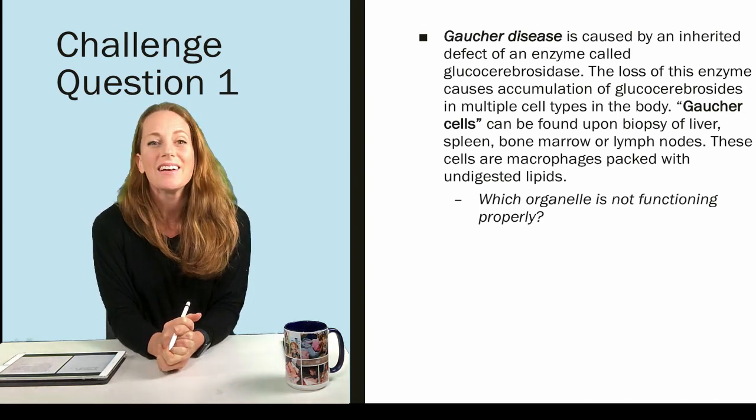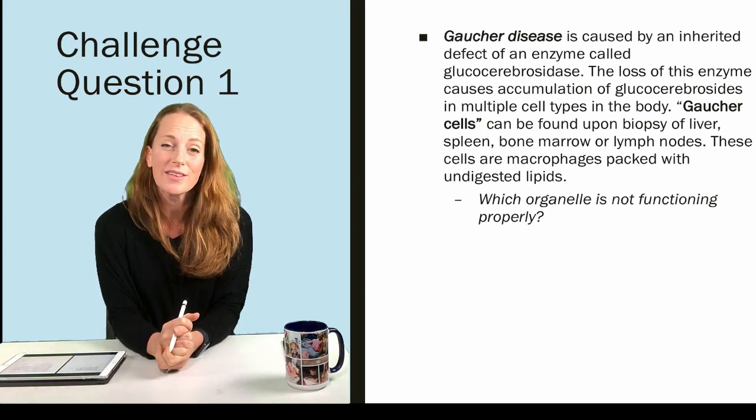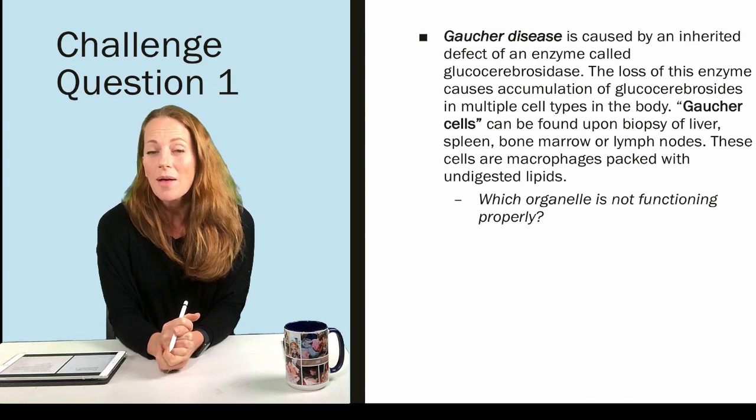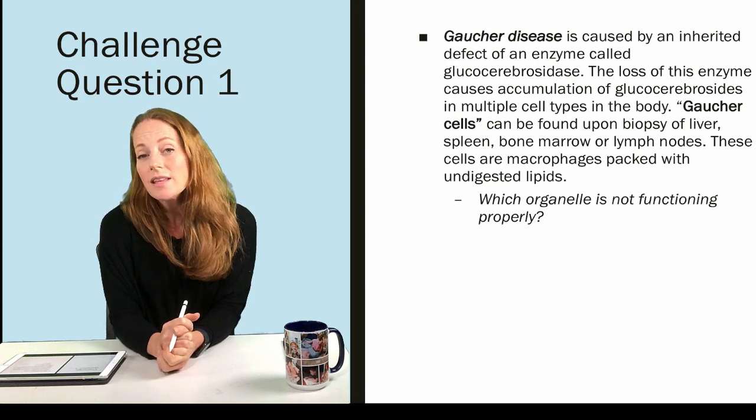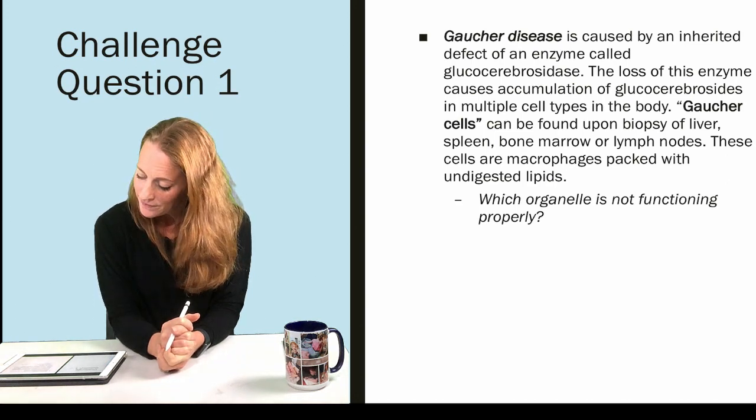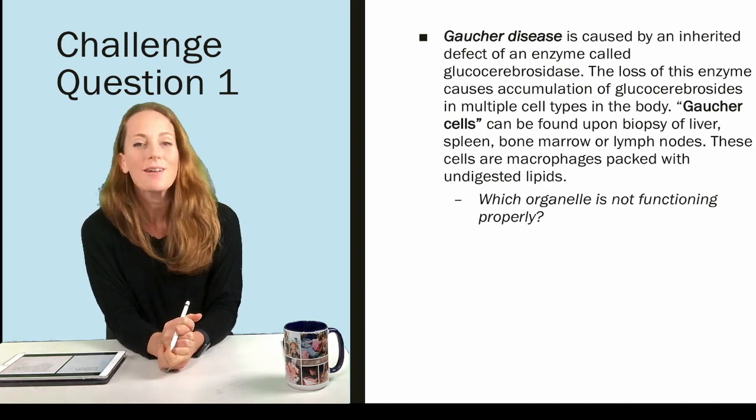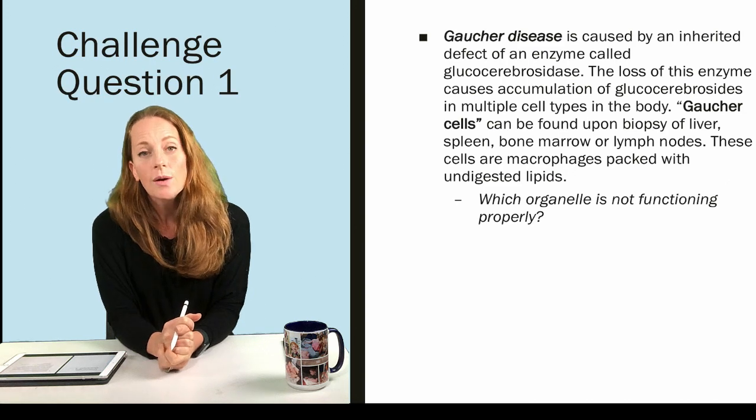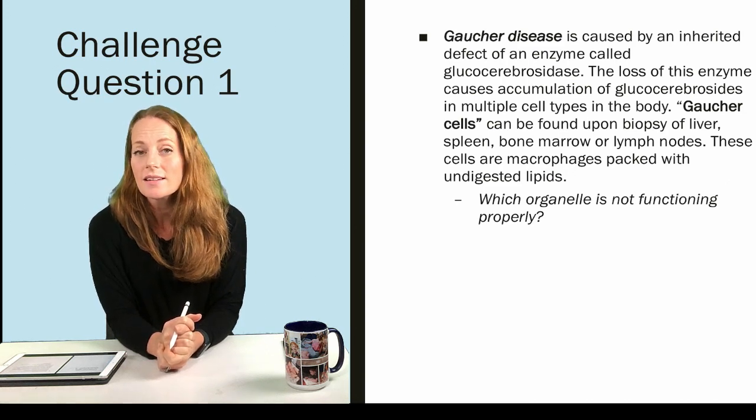Gaucher cells are diagnostic for this disease, and they can be found with biopsy of liver, spleen, bone marrow, or lymph nodes. These cells are macrophages packed with undigested lipids.